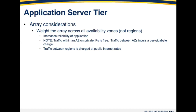It's important to note that traffic within an availability zone on the private IPs is free. If your instances communicate on the 10.x network within an availability zone, there's no charge for this bandwidth. However, traffic between availability zones does incur a per-gigabyte charge, which is currently nominal but should be considered. Additionally, traffic between regions is charged at public internet rates and is subject to the latency inherent in traversing the public internet — therefore it's not a recommended best practice.